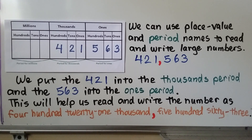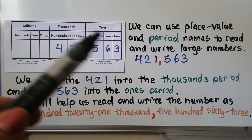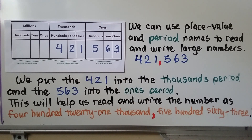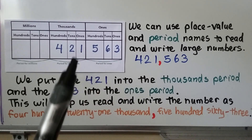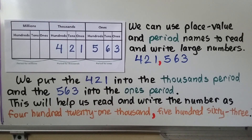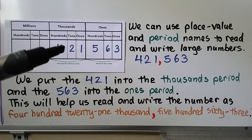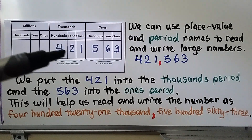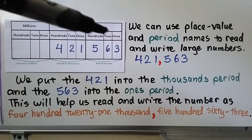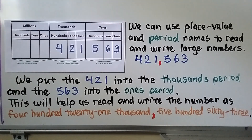We can use place value and period names to read and write large numbers. Here we've got a large number. We put it into our place value chart: four, two, and one go into the thousands period, and five, six, and three go into the ones period. This helps us read and write the number 421,563.